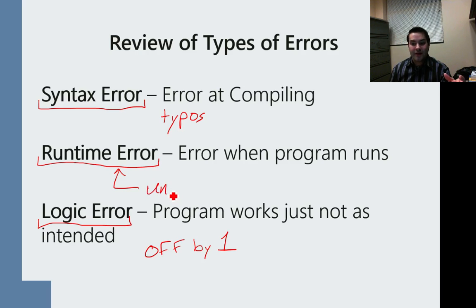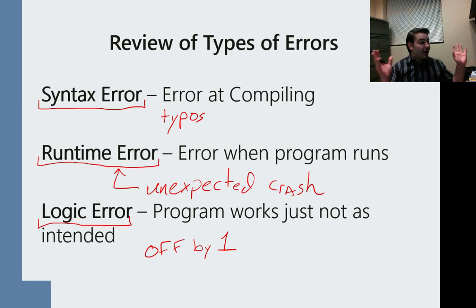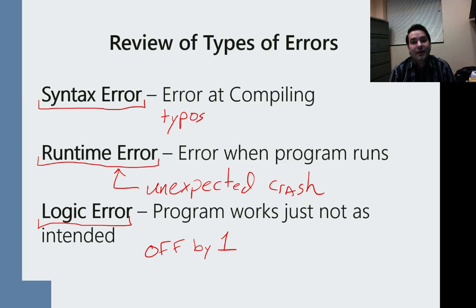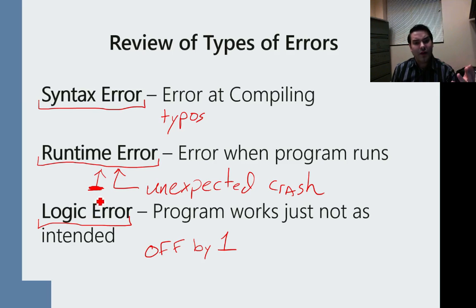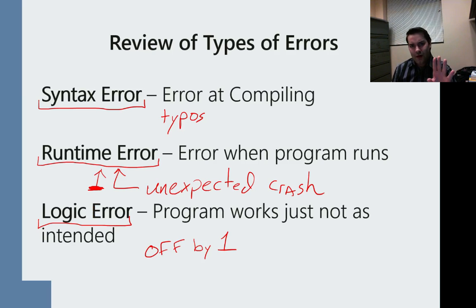A runtime error is an unexpected crash — it's when your program just crashes. It was running perfectly fine, spitting out numbers, and then boom. That's what a runtime error really indicates. This is really where all of the exception handling resides: we are making sure that if we ever run into an issue, if we ever hit a problem, we stop and decide that we want something else to happen instead.